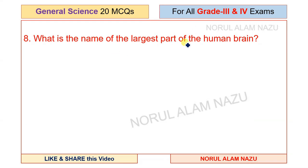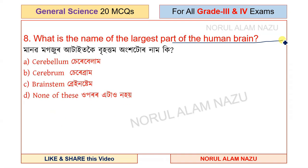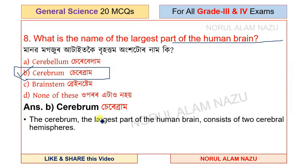What is the name of the largest part of the human brain? The options are cerebellum, cerebrum, brain stem, and none of these. The answer is the cerebrum, which consists of two cerebral hemispheres and is the largest part of the human brain.